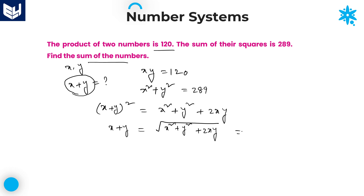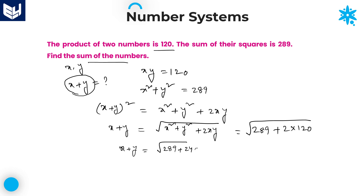Substituting all values: x plus y equals square root of 289 plus 2 times 120, which equals square root of 289 plus 240, which equals square root of 529. That value is 23. So the sum of those two numbers is equal to 23. That is the required answer for this question.